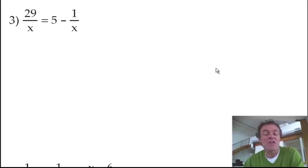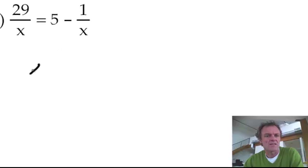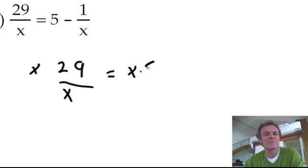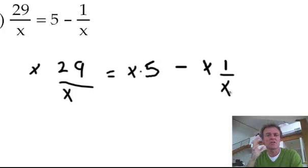So if I'm multiplying everything by x, I should get rid of those x's on the denominator. So here we go. x, I'm going to multiply that by the 29 over x. That equals, again, an x is going to be multiplied by the 5. Don't forget that as well. Minus an x is going to be multiplied by the 1 over x.